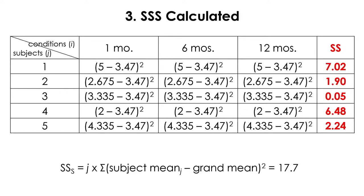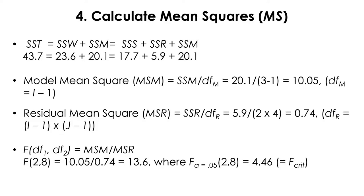Now that we have all the terms, we can calculate the mean squares. The total sum of squares splits into SSW and the model sum of squares — this part is the same as between-subject ANOVA. But the SSW term is further split into SSS and SSR, and that's where the difference comes from. We're going to use SSR in calculating the F ratio in within-subject ANOVA, giving us a larger F ratio compared to between-subject ANOVA with the same data.